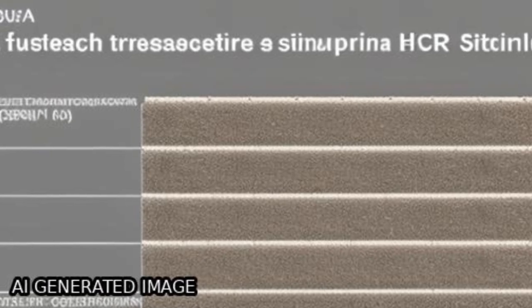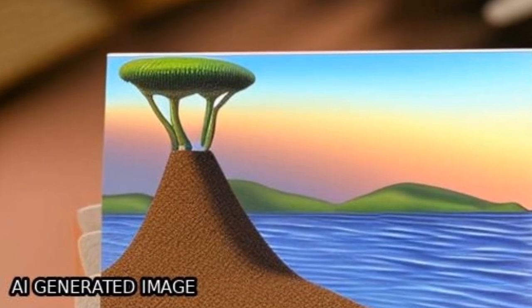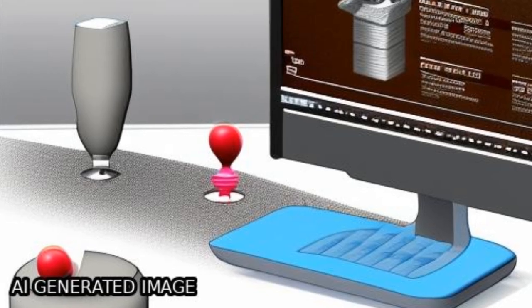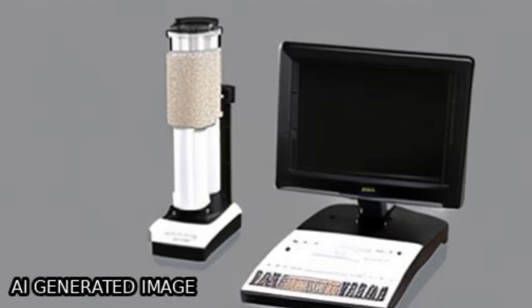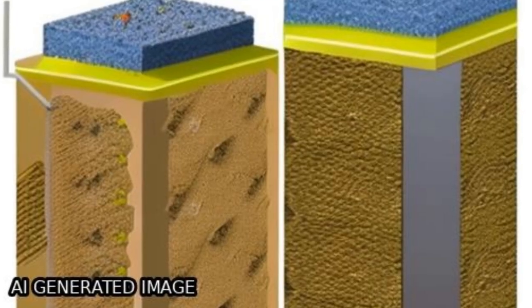WC-Cr3C2-Ni cermet coating exhibits higher erosion resistance under all testing conditions compared with WC-Ni cermet coating and Cr18Ni9Ti stainless steel. The erosion mechanism at low angle is mainly cutting.